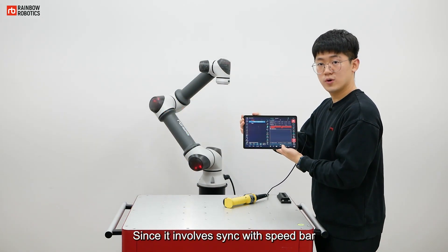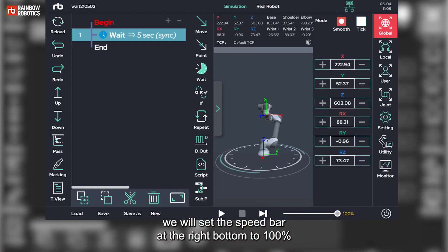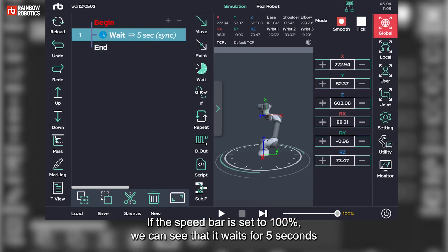The program tree will also show sync with speed bar after 5 seconds. Since it involves sync with speed bar, we will set the speed bar at the right bottom to 100% and run the program.